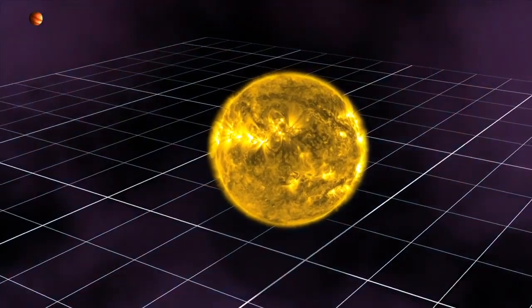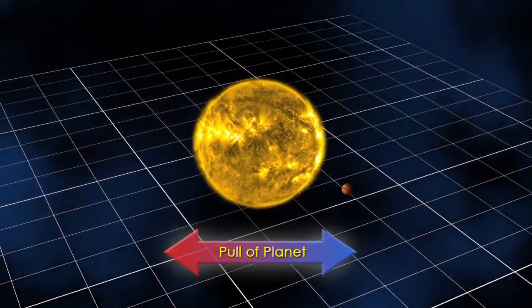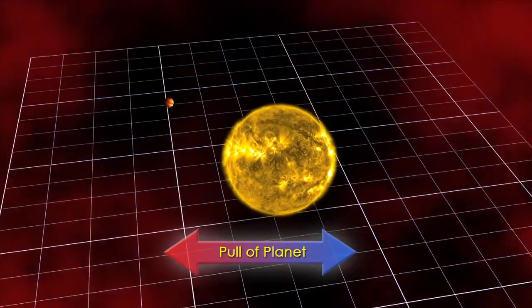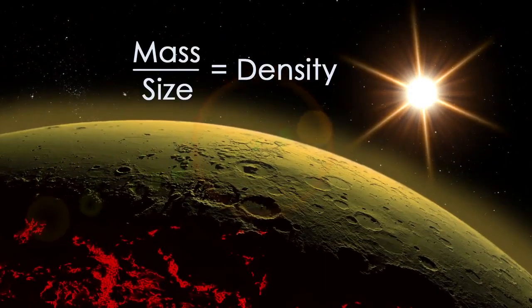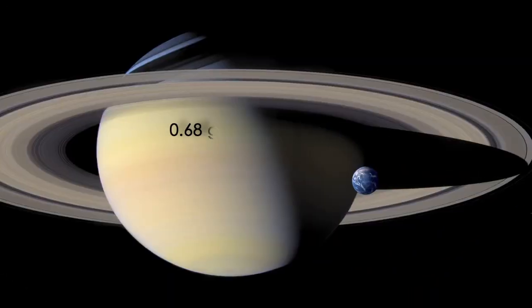By observing an exoplanet's gravitational pull on its star, astronomers can also determine the planet's mass and thus calculate its density to see if it is composed of rock, like Earth, or gas, like Saturn.